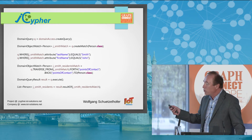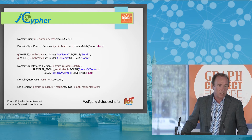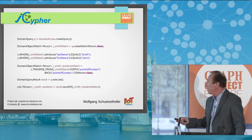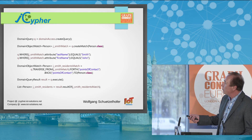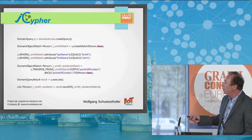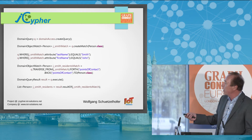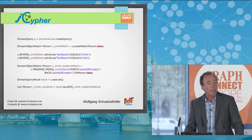If you want to OR them, you need to insert an OR clause, and you can also use brackets to arbitrarily nest those expressions. What we want to know in this query is which other persons live at John Smith's addresses. For that, we use a traversal clause, starting from John Smith forward via points of contact to objects of type person. In that way, we have defined another domain object match for persons who live at John Smith's addresses. It's that simple.